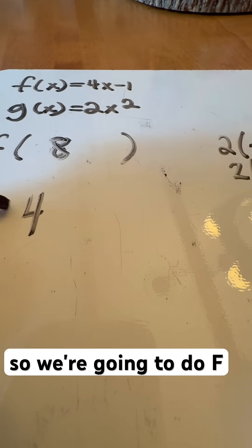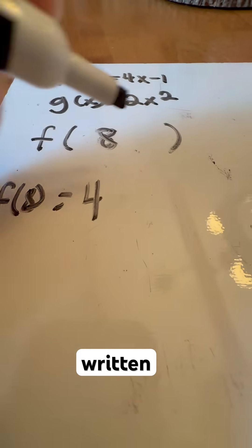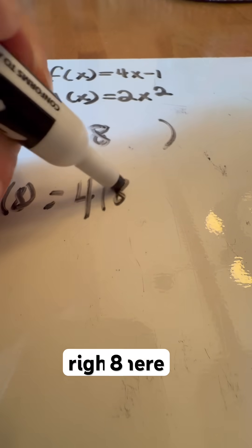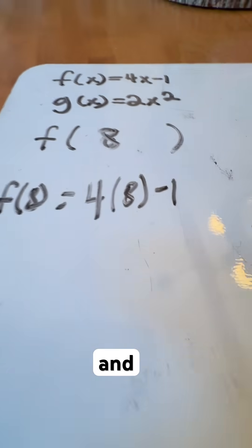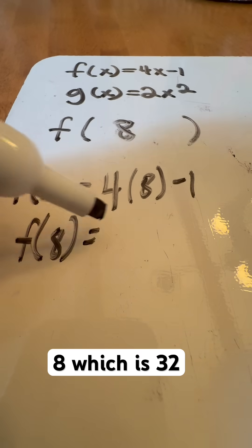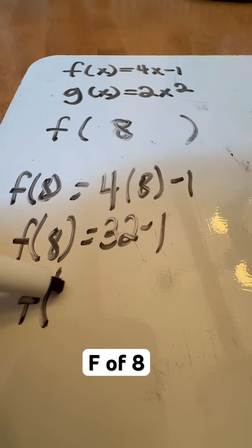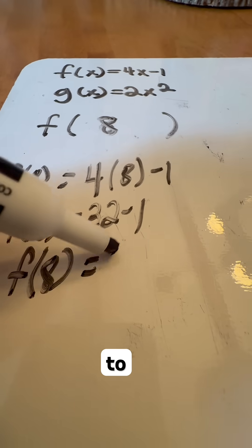So we're going to do f of 8, which is equal to 4 times 8, and then minus 1. That gives us 32 minus 1, so f of 8 equals 31.